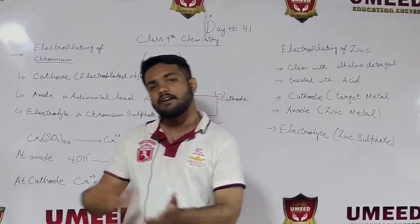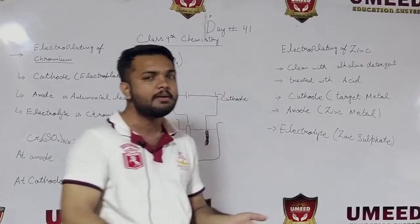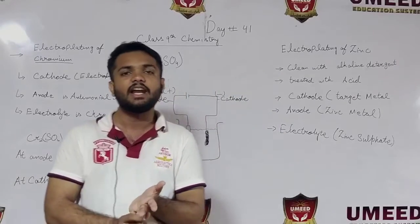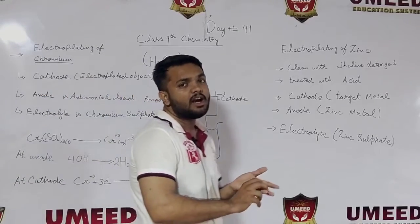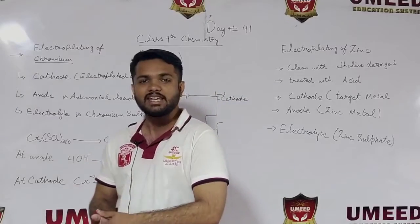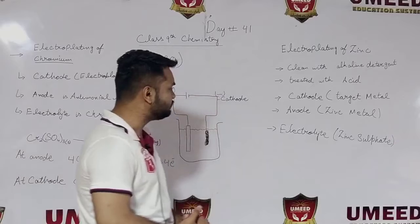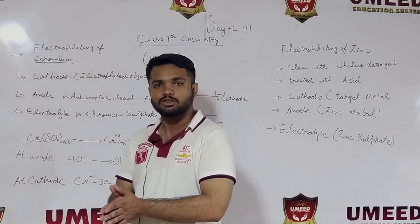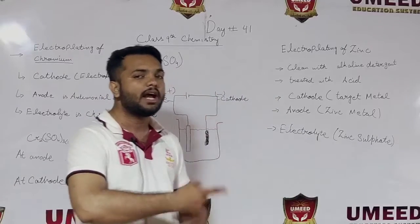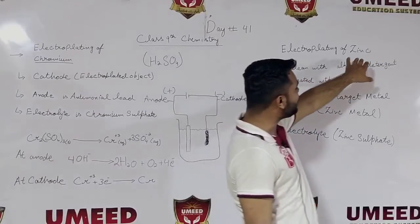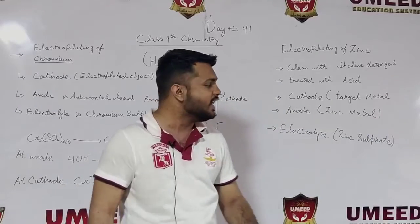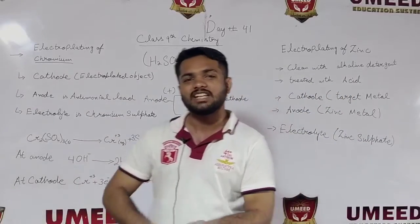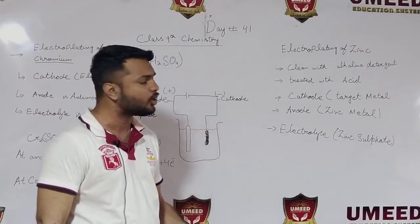The anode will always be the material whose electroplating we need to do. If we are doing zinc electroplating, zinc will be on the anode. If silver, silver will be on the anode. If chromium, chromium will be on the anode. The electrolyte will always be a solution of the salt of whichever metal we are electroplating - for zinc we use zinc sulphate. The entire process remains the same and the zinc electroplating will be done on whichever metal surface we desire.